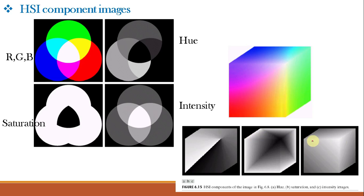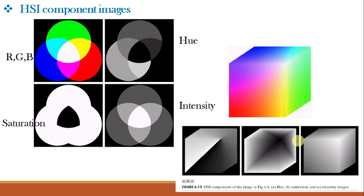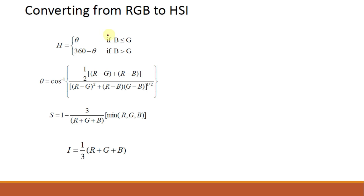Hue, saturation, and intensity planes alone are visible as grayscale images, and the same is true for the R, G, and B planes. This is because any color R, G, or B is not made up of a single color but rather a combination of different colors in different proportions — that is why they appear as monochrome images individually.